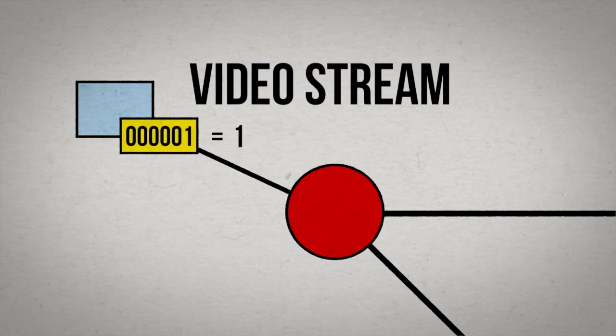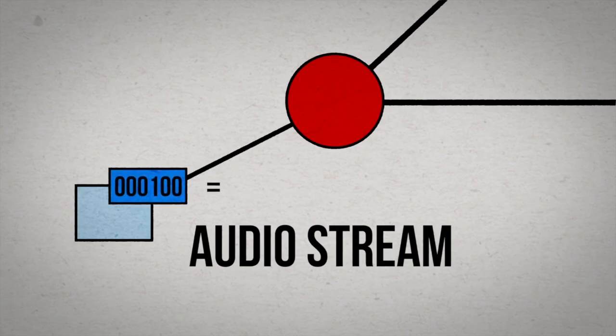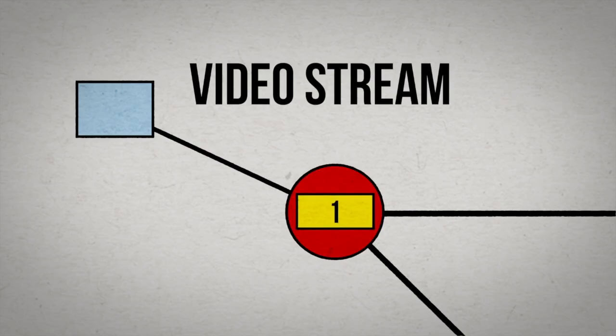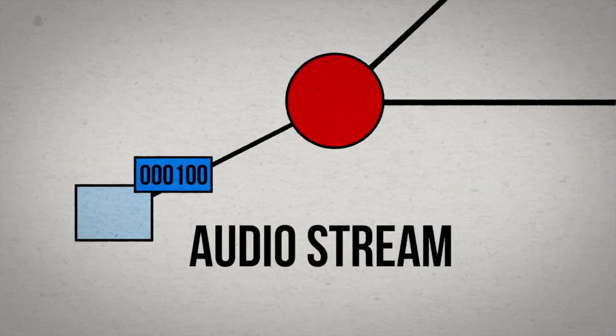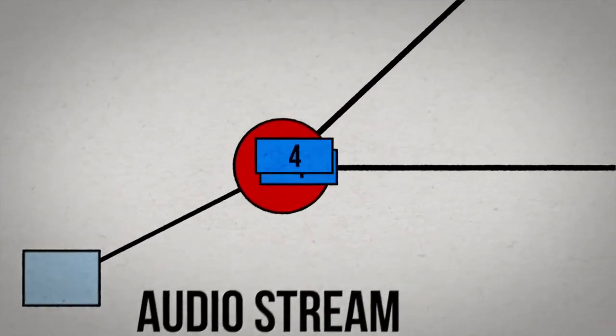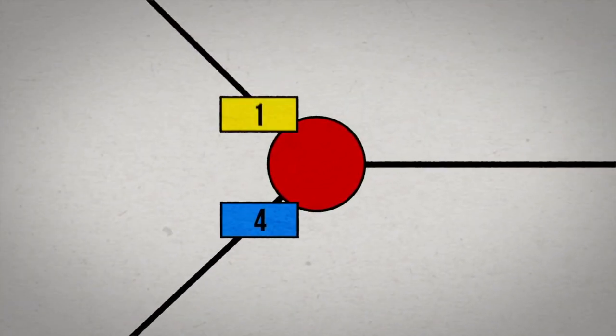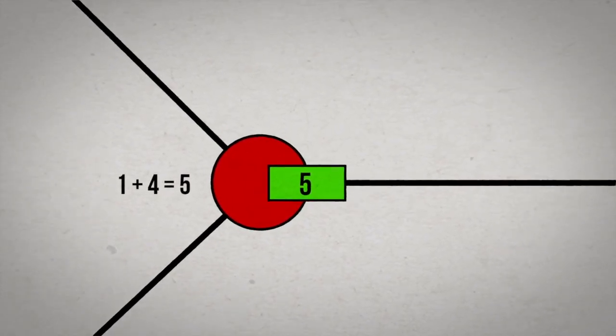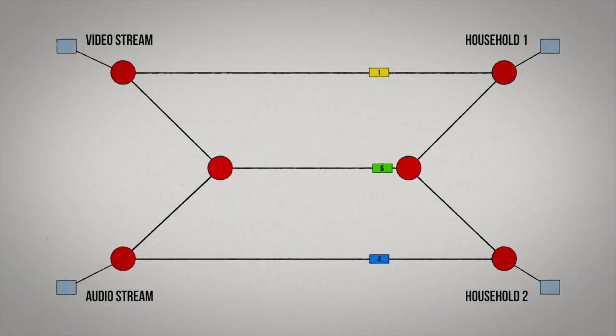Let's say the video packet being sent can be represented by the number one, and the audio packet can be represented by the number four. When the video packet hits its first hub, it's the only one to arrive, so it's sent unchanged along all output lines. The same thing happens when the music packet hits its first hub. But now look at the middle hub. It receives two packets. So to avoid forming a line, it adds them together and sends the result as a single packet. Notice now that both households receive their packets just as fast as if they were alone on the network.